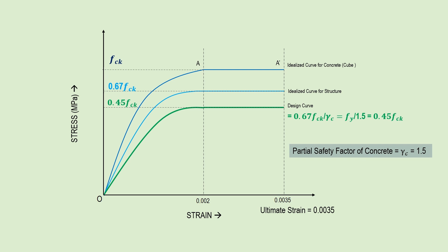Finally, we use a reduced design strength value of 0.45 FCK for designing concrete structures. In all three cases, the ultimate strain value is reached at 0.0035. While it is possible for strain to exceed 0.0035, based on various studies and as recommended by the Indian Standard Code, we idealize it as 0.0035 to develop designs from this graph. To conclude: for concrete design, the design strength is 0.45 FCK and the ultimate strain value is 0.0035. These two values are the basis for deriving formulas for beam design and the moment of resistance of reinforced concrete structures.